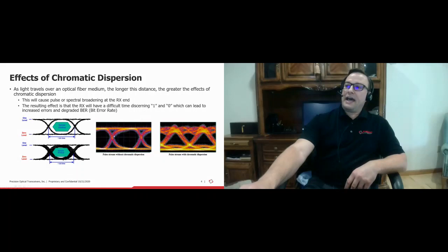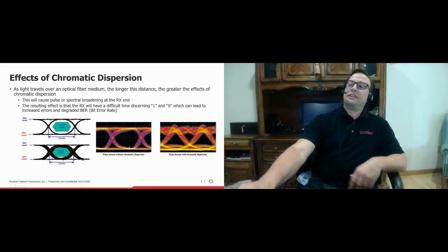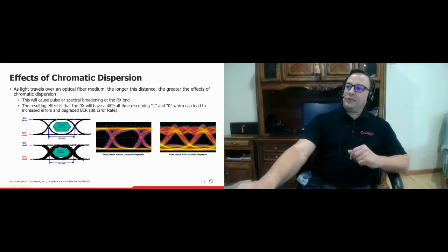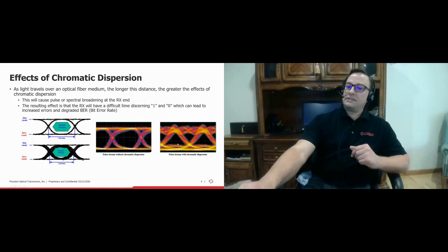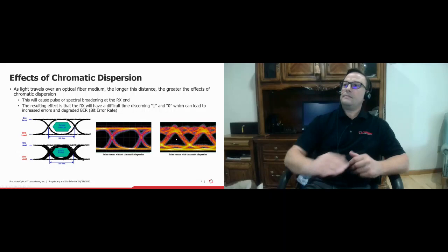To the right is a real eye diagram. You can see a nice, wide, open extinction ratio from top to bottom. Once you traverse 80 kilometers of optical fiber, look at the pulse with chromatic dispersion — the eye begins to substantially close. The extinction ratio substantially decreases, and that sample window makes it more difficult to determine 1s and 0s. That's where you start taking bit error rate hits.